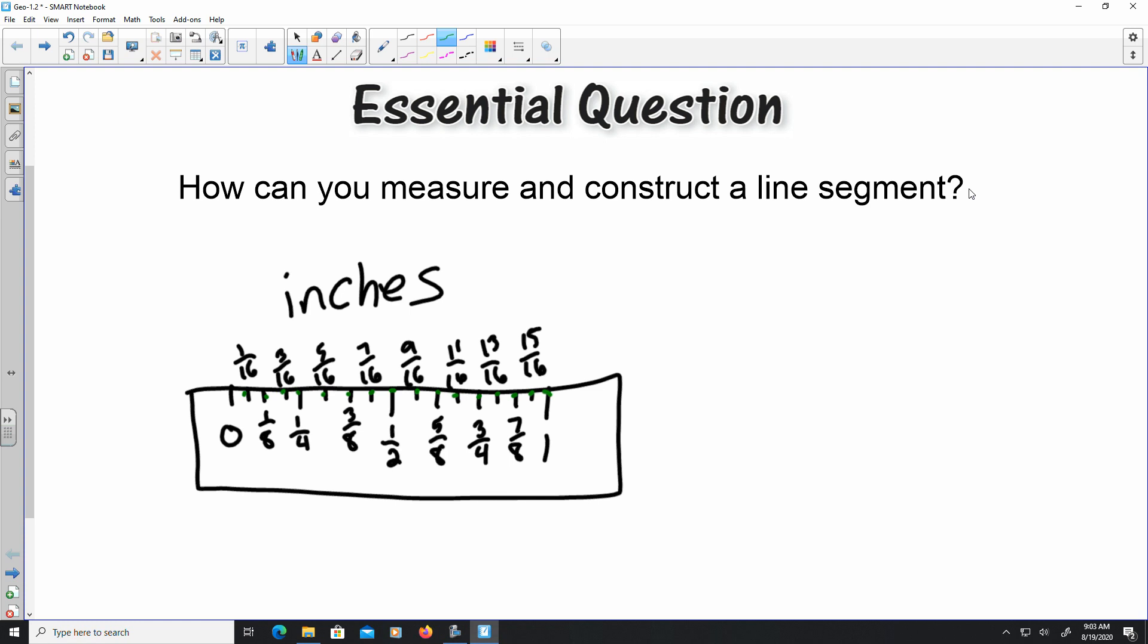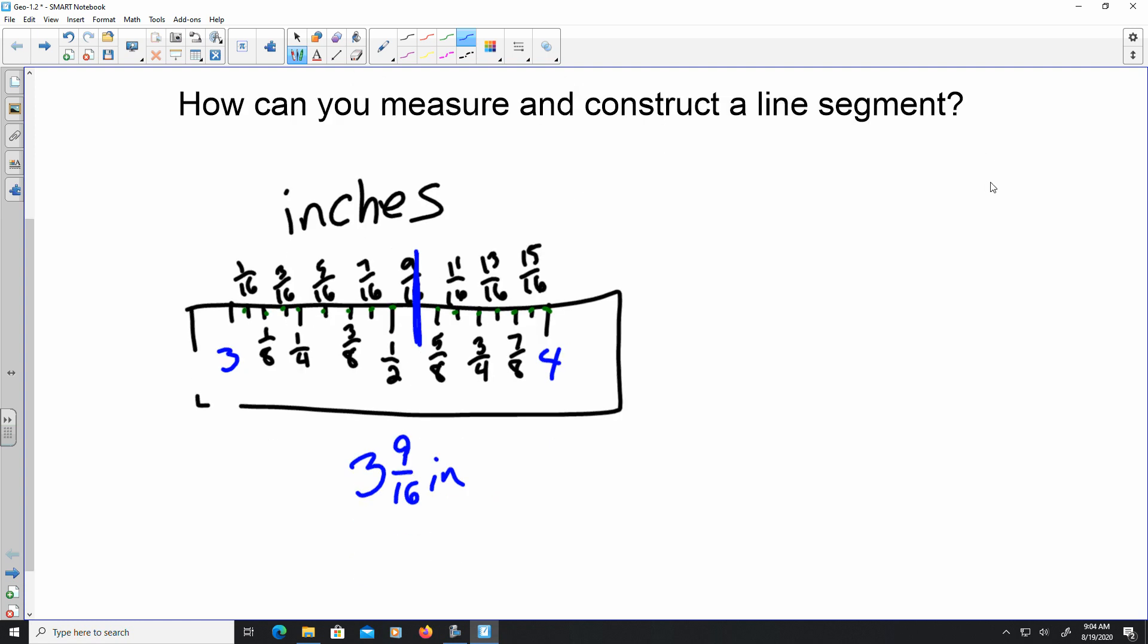Let's say, for instance, you're measuring something and it's between three and four inches and it ends up being right here. They want us to measure within like a sixteenth of an inch. So that spot would be three and nine sixteenths inches. You need to keep in mind that when you are writing things in inches, it should be as a fraction, not a decimal. A fraction, not a decimal.